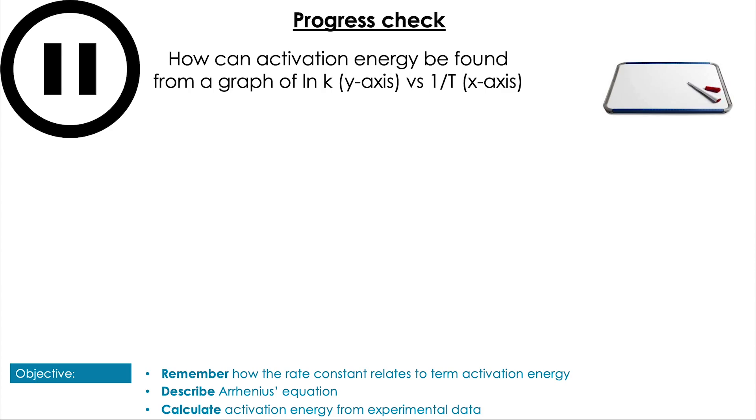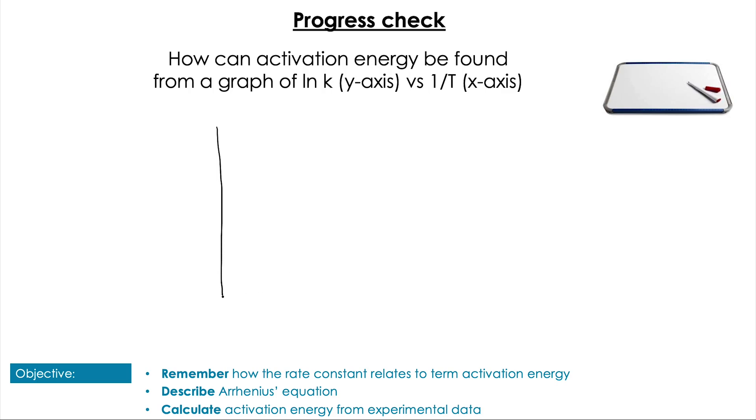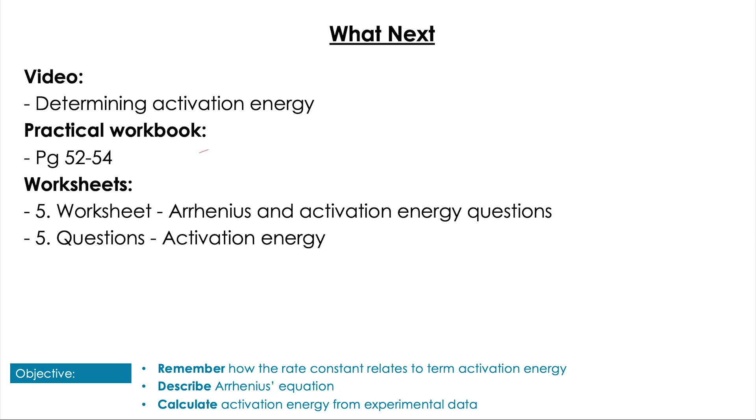So once we've got that graph, we can plot the linear plot ln k versus 1 over T, and the gradient of that line is going to be equal to the negative Ea over R. So therefore, the activation energy is going to be equal to negative the slope multiplied by the universal gas constant.